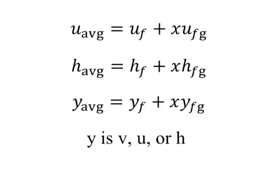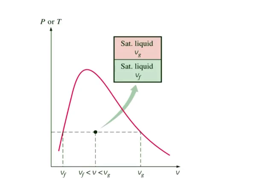The subscript AVG for average is usually dropped for simplicity. The values of the average properties of the mixtures are always between the values of the saturated liquid and the saturated vapor properties, that is Yf is less than or equal to Y, which is less than or equal to Yg. Finally, all saturated mixture states are located under the saturation curve, and to analyze saturated mixtures all we need are saturated liquid and saturated vapor data — that is, table A4 and A5 in the case of water.